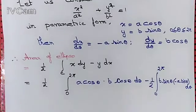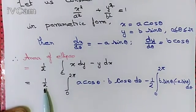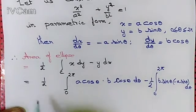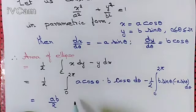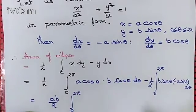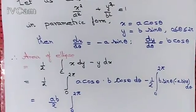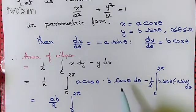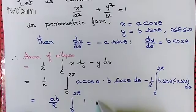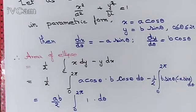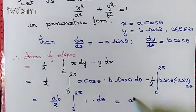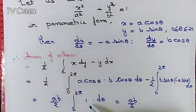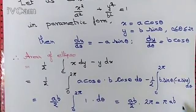It turns out to be quite simple. We can take ab/2 as a common factor from both integrals and combine them into a single integral from 0 to 2π of (cos²θ + sin²θ) dθ, which equals 1. So we have ab/2 times the integral from 0 to 2π of dθ, which is ab/2 times 2π. And that gives the area of the ellipse as π ab square units.